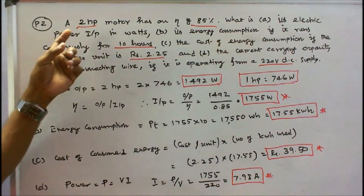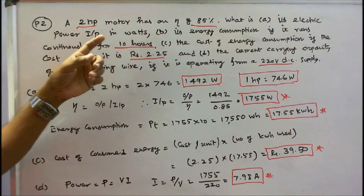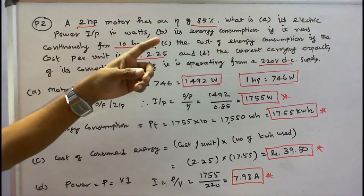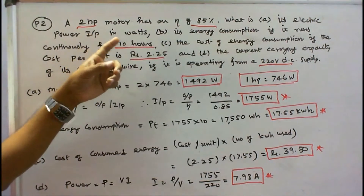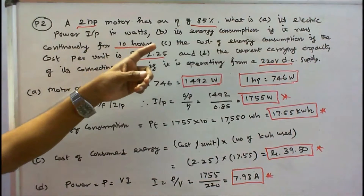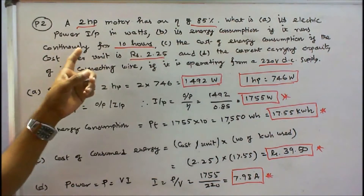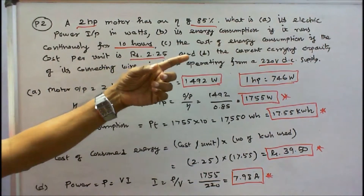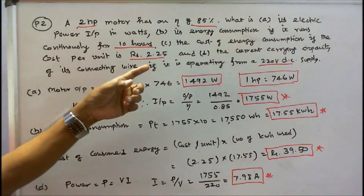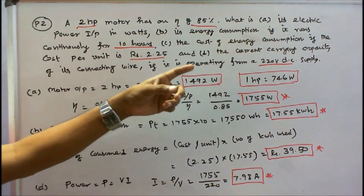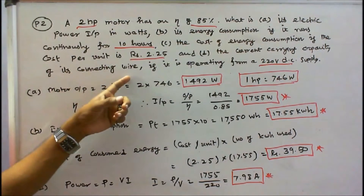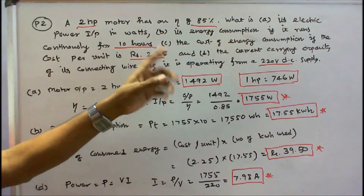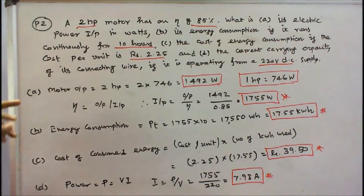Problem 2: A 2 hp motor has an efficiency of 85%. Find: A) its electrical power input in watts, B) its energy consumption if it runs continuously for 10 hours, C) the cost of energy consumption if cost per unit is Rs. 2.25, and D) the current carrying capacity of its connecting wire if it is operating from a 220V DC supply.